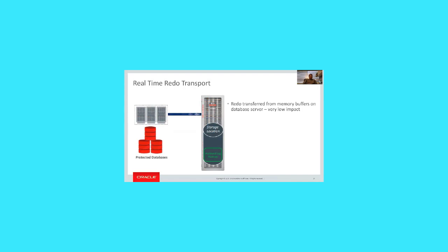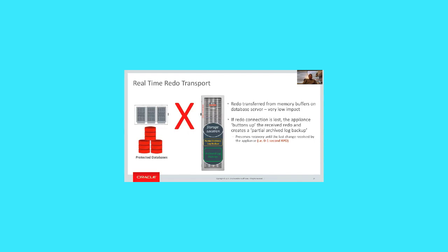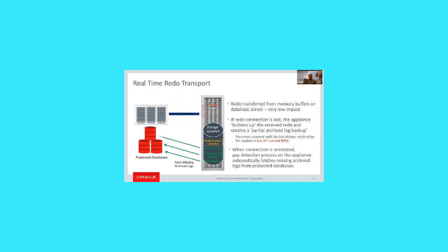Redo transport leverages Data Guard technology — very low-impact asynchronous redo shipping. If a connection is lost, the appliance internally terminates and saves received redo into what is called a partial archive log backup, preserving recovery up to the last change received — delivering on the zero data loss promise with sub-second protection. When the connection is reinstated, a gap detection process automatically fetches any missing logs from the protected databases, catches everything up, and replaces the partial archive log backups with complete archive log backups.